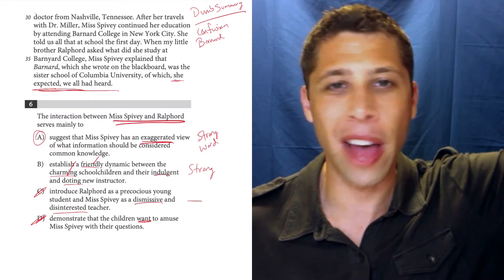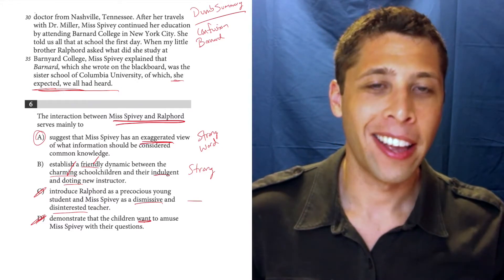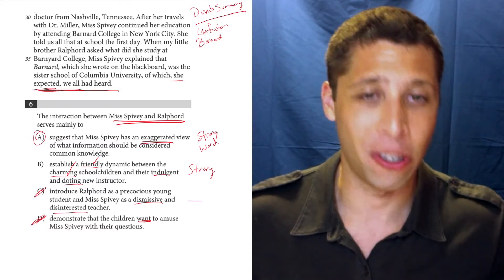She assumes like a seven-year-old kid is going to know the name of a college, you know, a thousand miles away. That's ridiculous. Of course he doesn't know that. And so it's an exaggerated view. She's wrong to have assumed that he should know that.